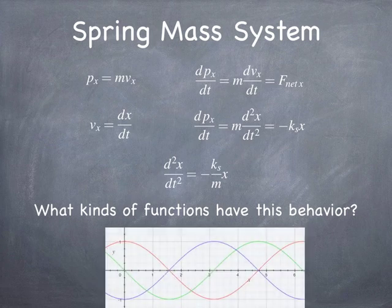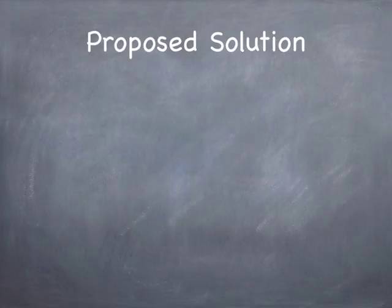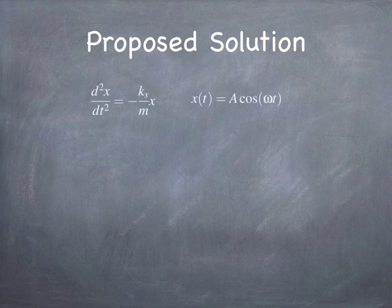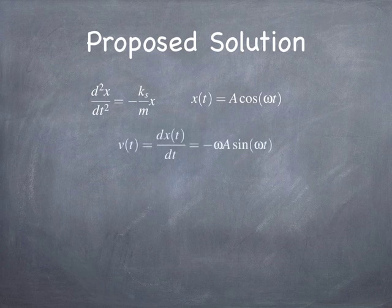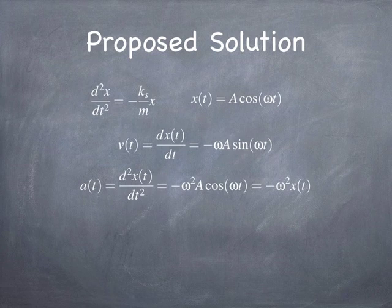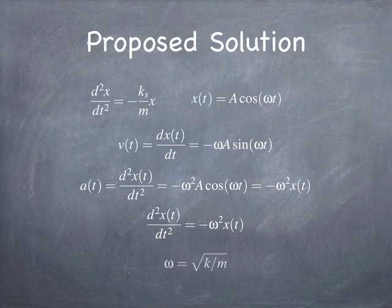The question is: what kind of functions have the property that the second derivative of position with respect to time equals minus a constant times the function? It turns out to be nothing other than sines and cosines. If you assume displacement goes like a cosine, then velocity goes like a sine, and acceleration goes like minus ω² times the cosine. So you get an acceleration that's minus ω² times the displacement. Since the original problem states d²x/dt² = −(k/m)x, you can identify ω² with k/m, meaning ω = √(k/m).